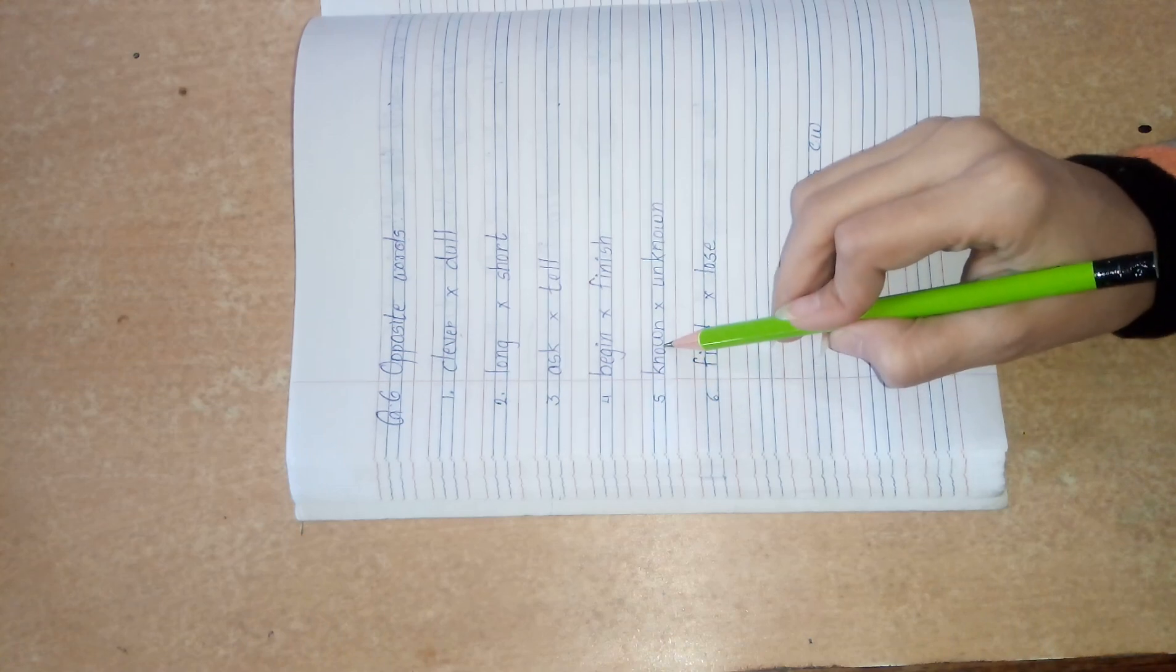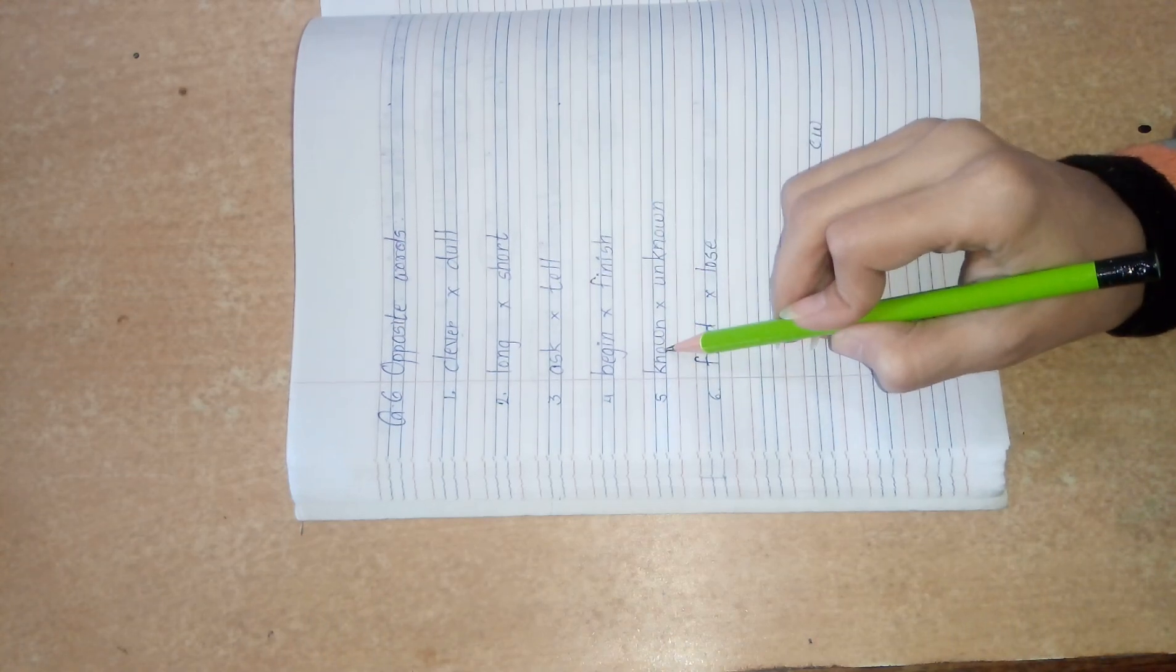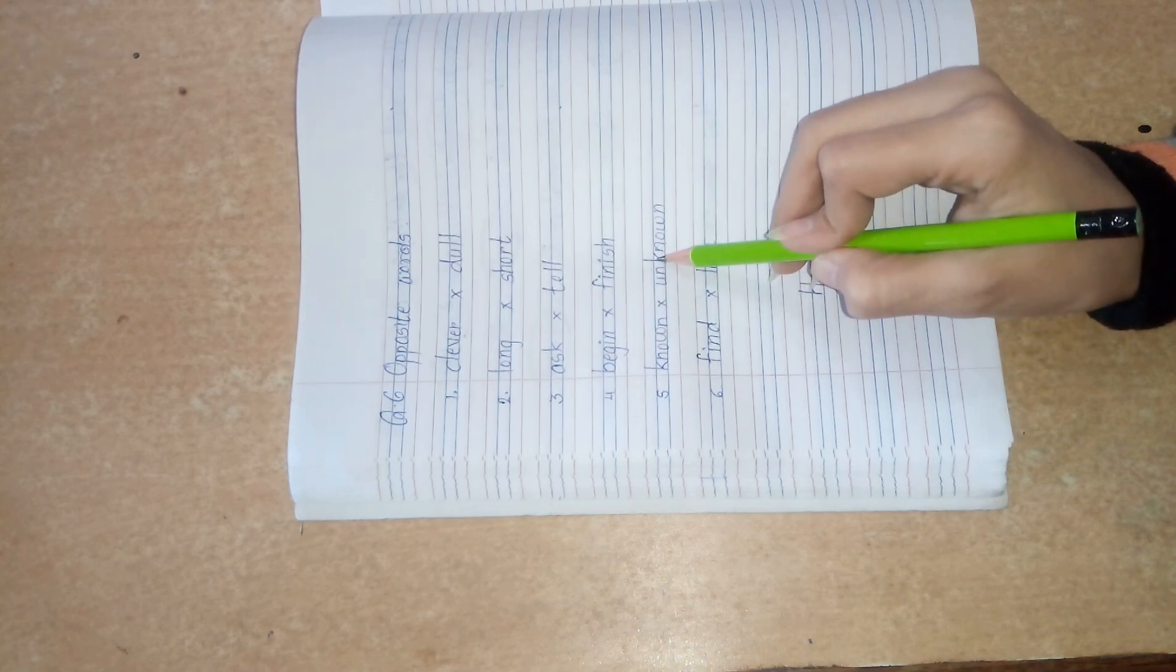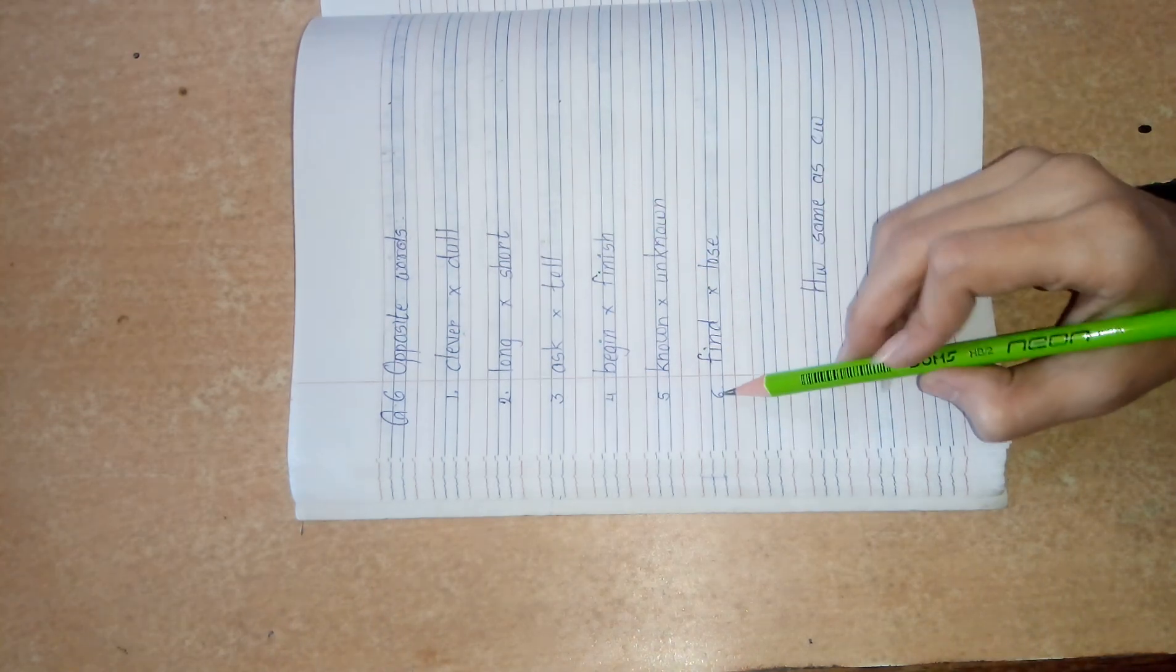5. Known, opposite, unknown. Known means stranger. Unknown means stranger.